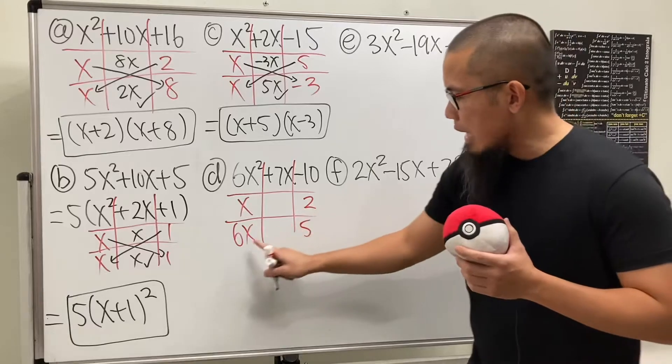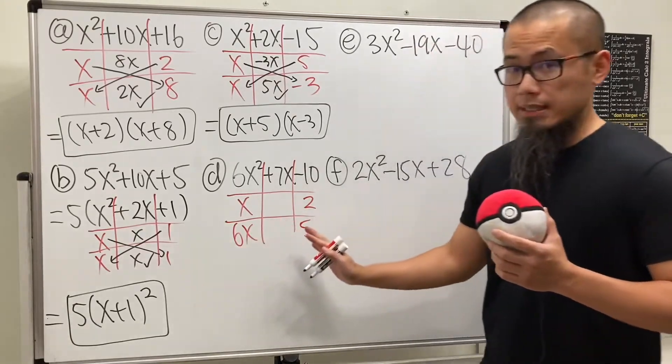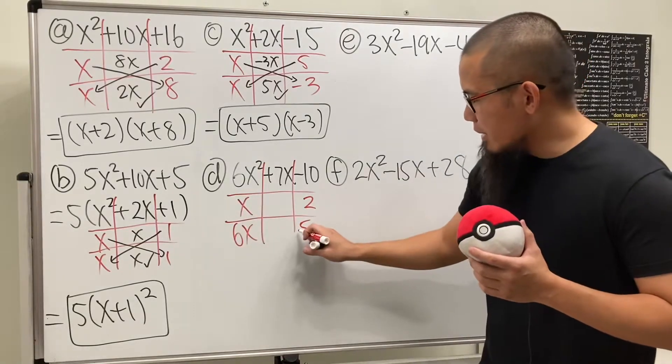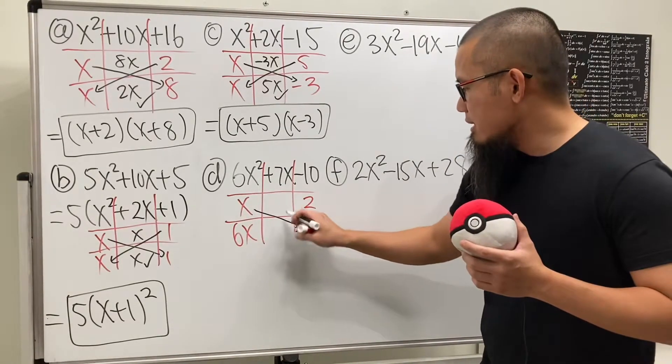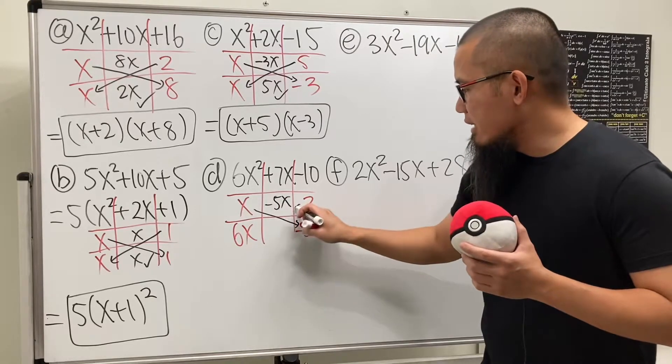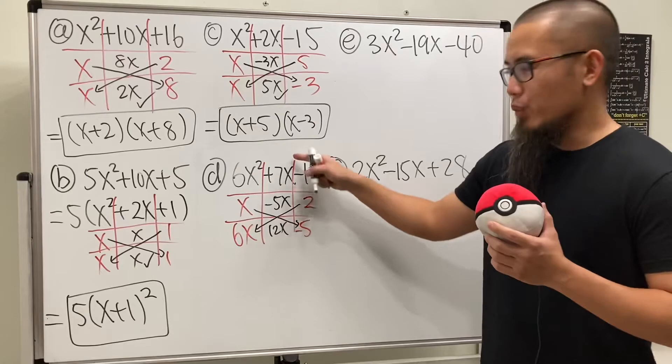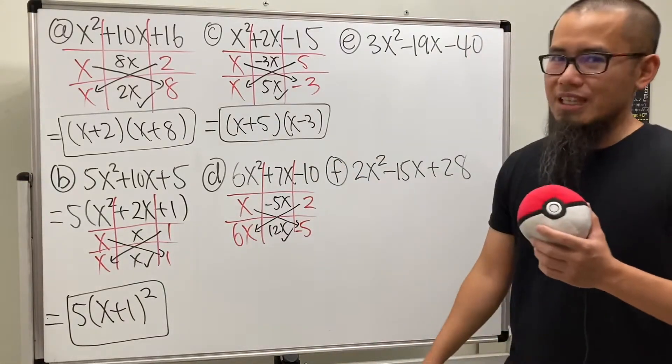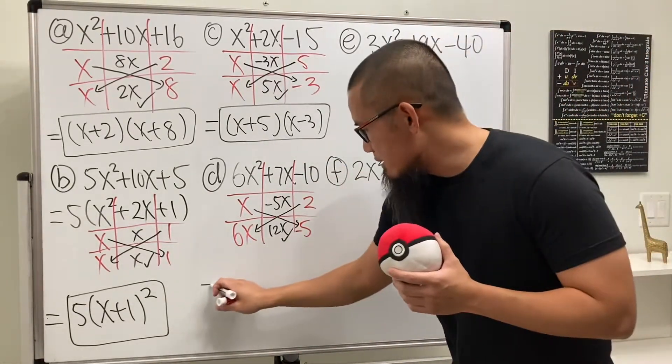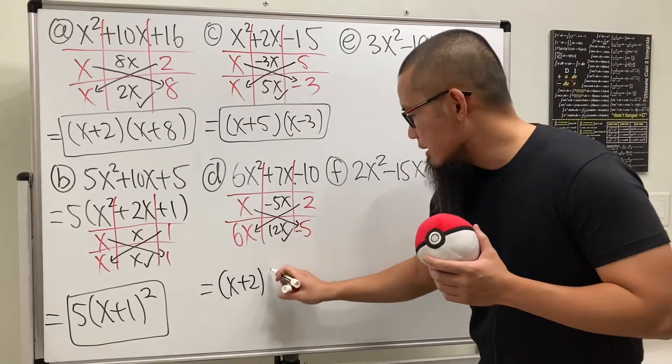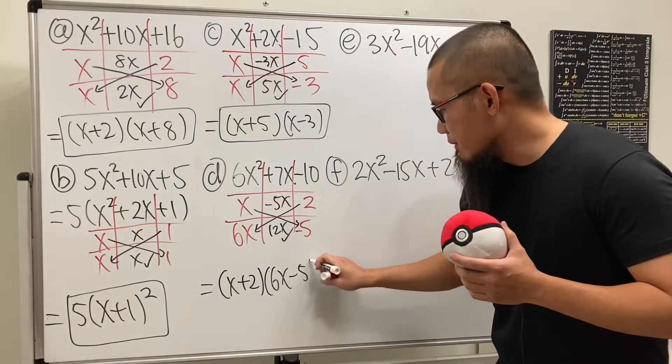What we'll do is put down 2 here and then 5 here. And you see, 2 times 6x is 12x, and then that will give us 5x here. Well, if we make this negative, then we will have x times this, which is negative 5x, and then this times that will give us 12x. And then you see, this and that together, we do get the positive 6x.